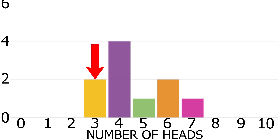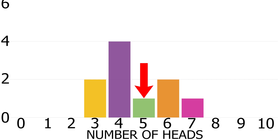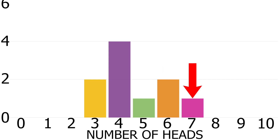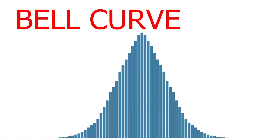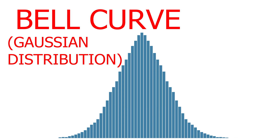I got three twice, four four times, five once, six twice, and seven one time. It still just looks really random. It should really look like this — this is called a bell curve, or to be more technical, a Gaussian distribution.